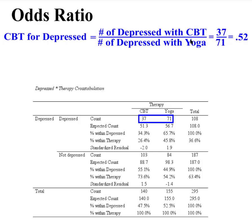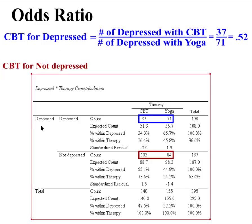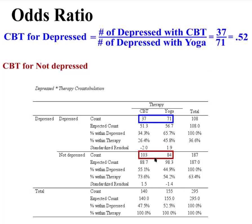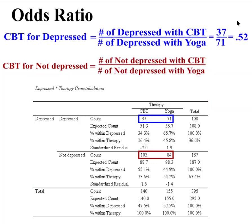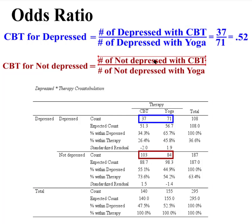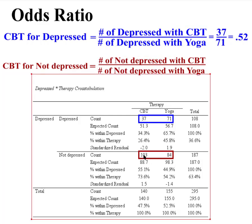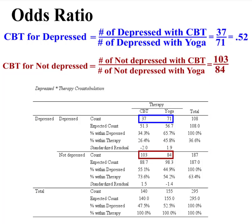Now we're going to do the not depressed group. It works just like the one above. We look at CBT for the not depressed. CBT was 103, yoga was 84. We put 103 on top and 84 on the bottom, and turn that into a decimal of 1.23.